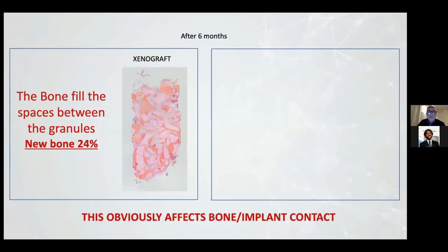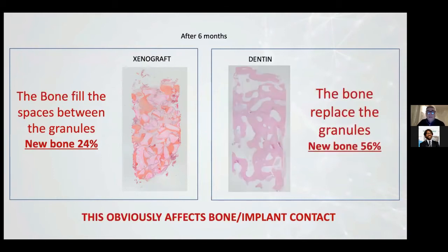Comparing the same situation of socket preservation after six months: on the left side we have the xenograft material, and on the right side the same situation but using only dentine. In this case, we have 56% of new bone after six months. If you use xenograft material, we have only 24%.